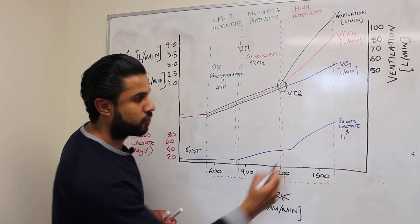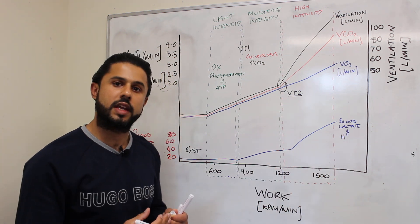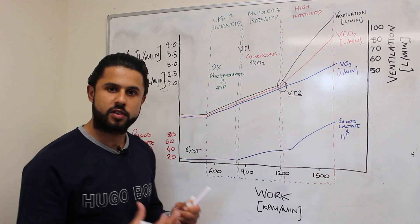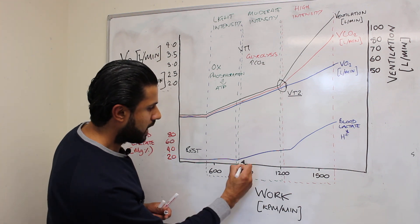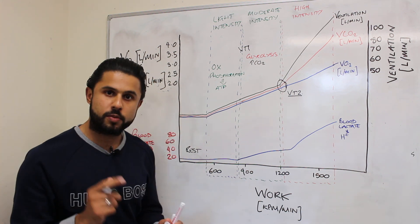And of course when lactate increases we also get an increase in hydrogen ions as well. This can start to increase the acidity within the muscle tissue so lactate starts to increase.